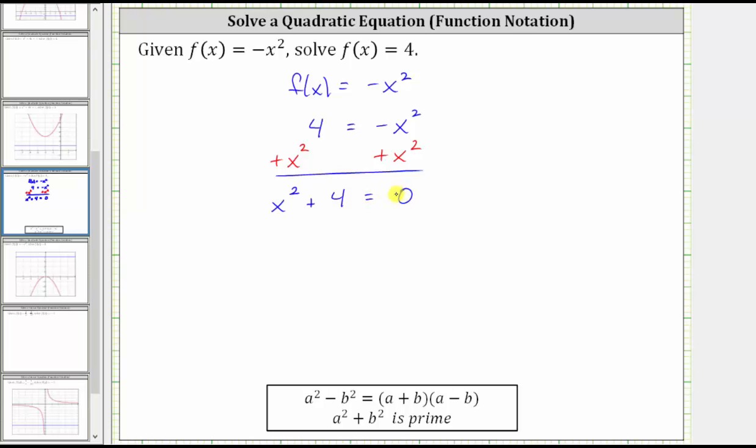And now to solve by factoring, we need to factor the left side of the equation. Notice how we have a sum of squares, not a difference of squares. A difference of squares is factorable, but a sum of squares does not factor, it is considered prime.